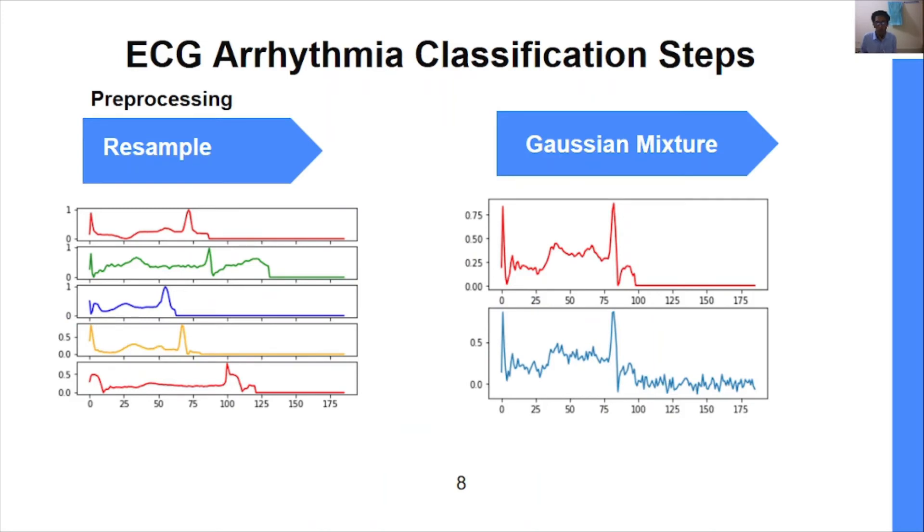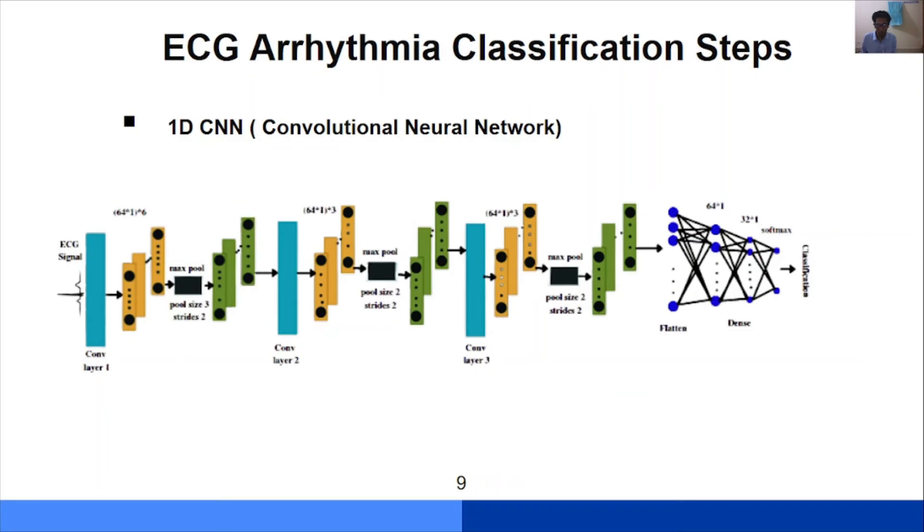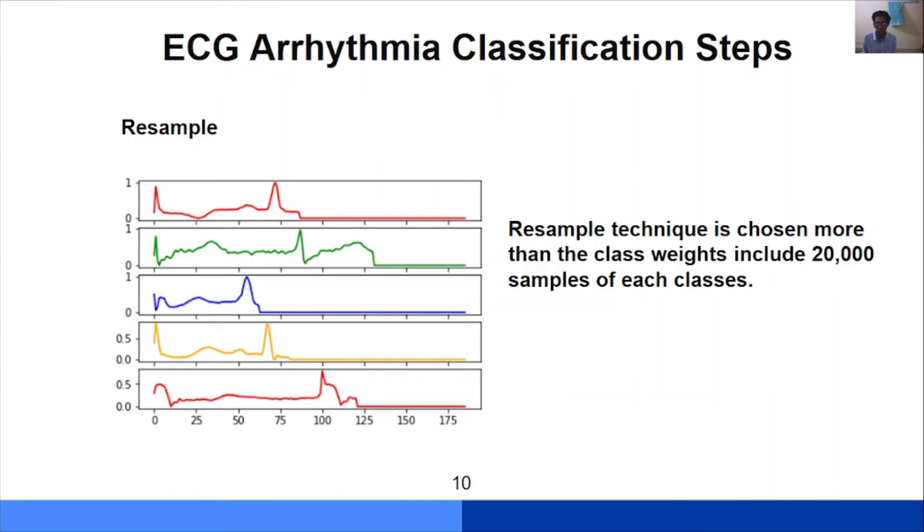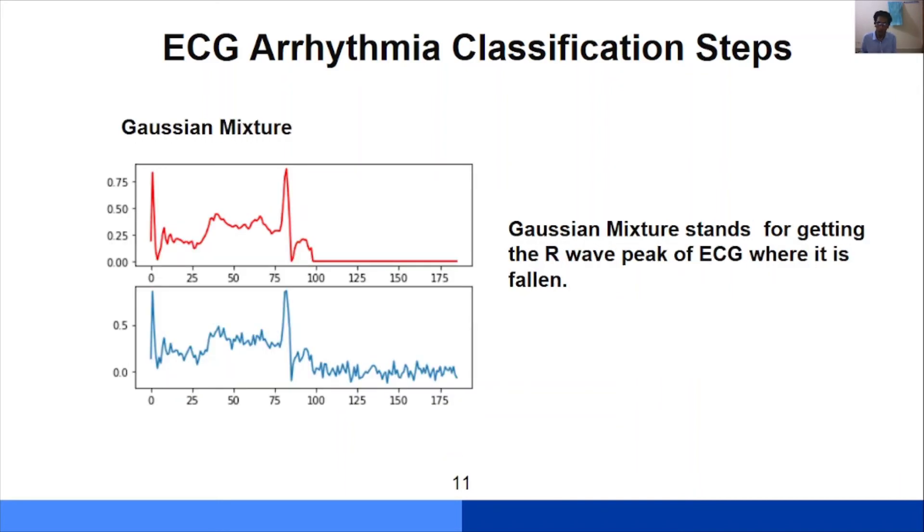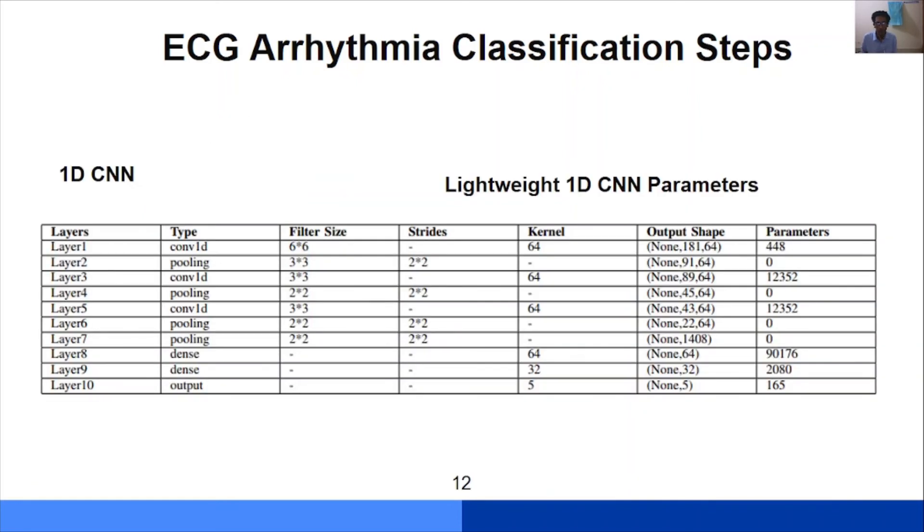Here are our classification steps. First we go for preprocessing where resample and Gaussian mixtures are used, then we go for 1D CNN. For resample technique, we chose more than 20,000 samples of each class as shown in the graph. Then we go for the Gaussian mixture model. The Gaussian mixture is used for getting the R-wave peak of ECG where it is fallen. We use the Gaussian mixture to detect the R-wave peak because sometimes in the signal the R-wave peak is fallen and it is very important for detecting arrhythmia. Here are our 1D CNN parameters. We use 10 layers to build our model.